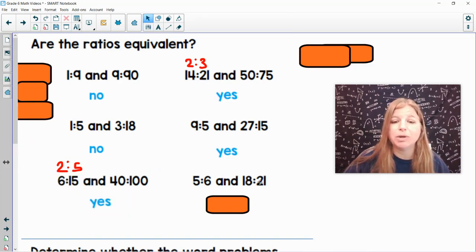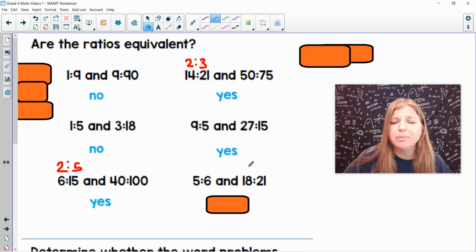And the last one, 5 to 6 and 18 to 21. 5 to 6 is simplified. 18 and 21 have a common factor of 3. If I divide them both by 3, I get 6 to 7, which then means that no, those two are not equivalent.